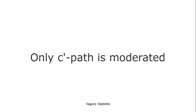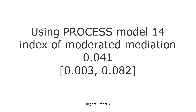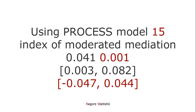Now to the real big problem: a situation where the true model has only the C prime path moderated. You're thinking the B path is moderated, but in reality the B path is unmoderated and the direct effect is moderated. For this third simulated dataset, I got a significant interaction for the B path — even though in truth there is no moderation for the B path. And I got a significant index of moderated mediation with process model 14, even though in reality there was no moderated mediation. There was an unmoderated mediation with a moderated direct effect. Using process model 15, results correctly show there is no interaction for the B path at all, and the index of moderated mediation correctly shows there is no moderated mediation.